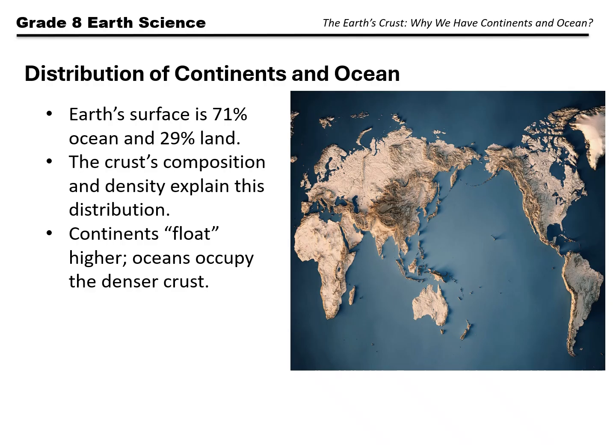The uneven distribution of continents and oceans — about 71% is ocean and only 29% is land — is due to these factors. The different composition of continental and oceanic crust results in a difference in densities. This difference in densities explains which crust stays at the bottom and which stays on top. Since the heavier, denser oceanic crust stays at the bottom, it forms the lower basin of the ocean. This explains why we have more ocean than land.